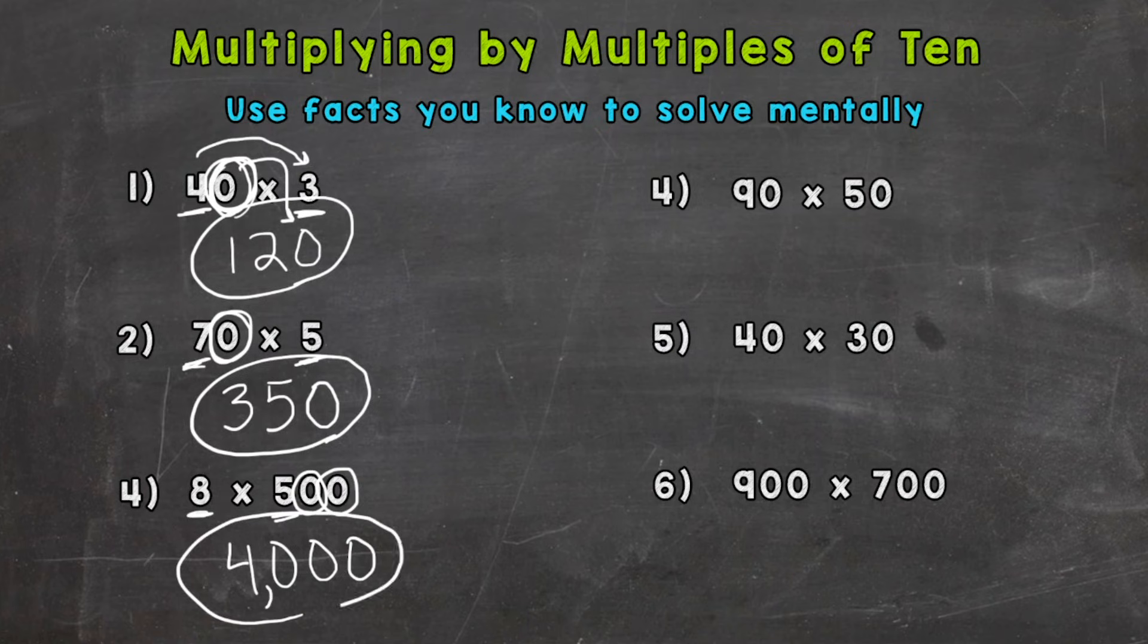Number 4: 90 times 50. Let's pick out our fact: 9 times 5, which is 45. Let's take a look at the factors of the original problem, the 90 and 50, and we have 1, 2 zeros: 1, 2, answer of 4500.